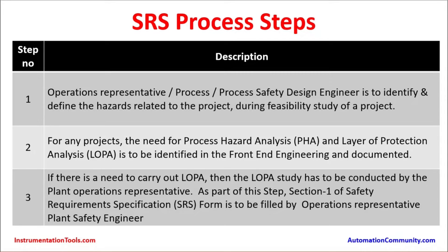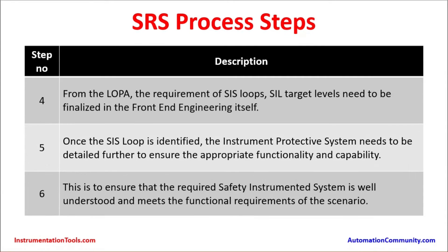During any project's initial front-end engineering phase, the process hazard analysis and layer of protection analysis must be identified. In step number three, if there is a need to carry out LOPA, the study must be conducted by the plant operations representative. As part of this step, section one of the safety requirements specification form is to be filled by the operations representative and plant safety engineer. In step number four, the requirements of SIS loops and SIL target levels are finalized from the LOPA document during front-end engineering.